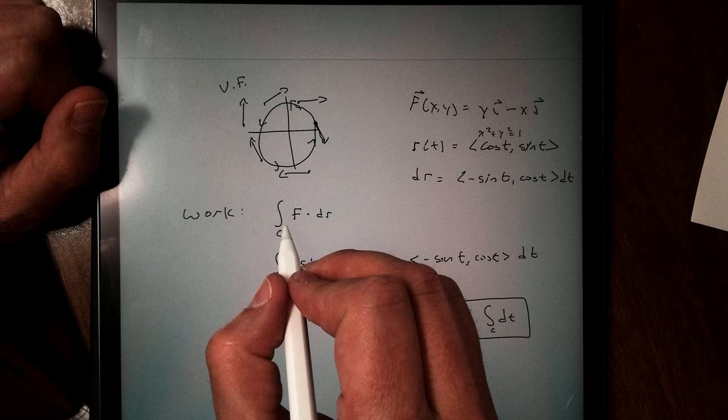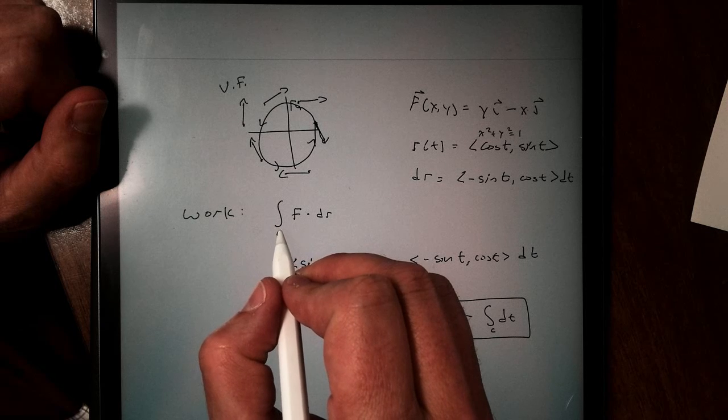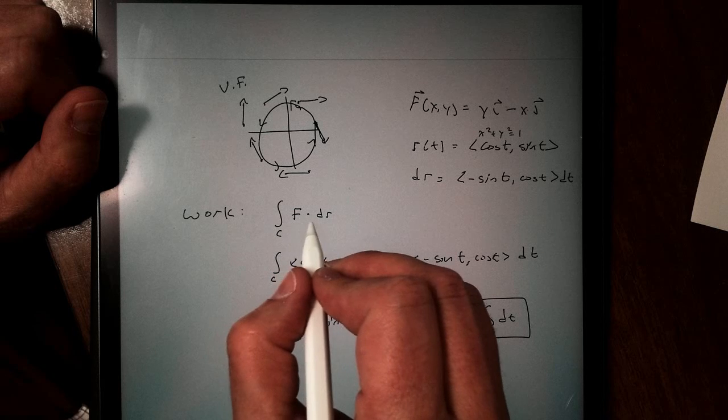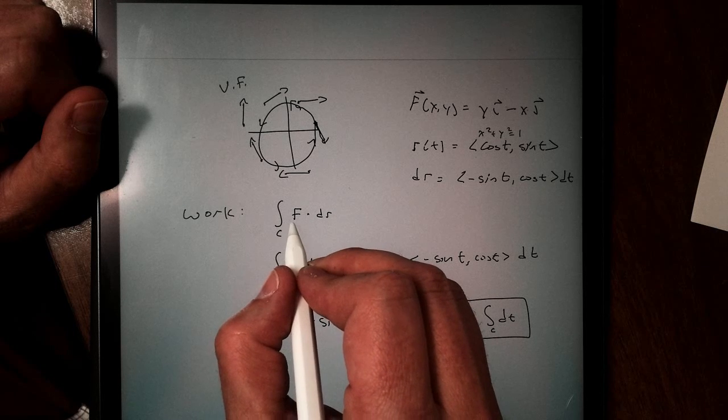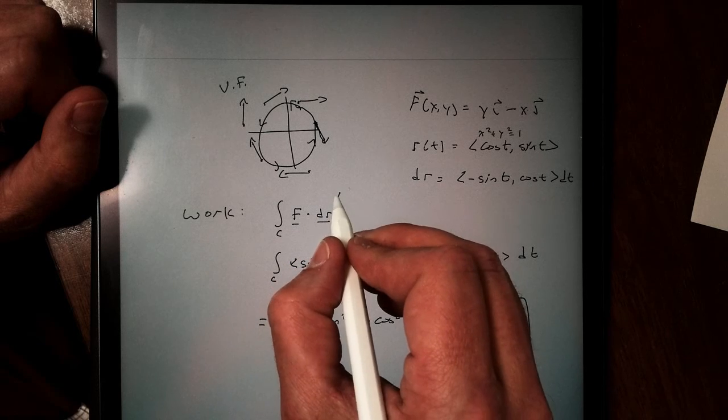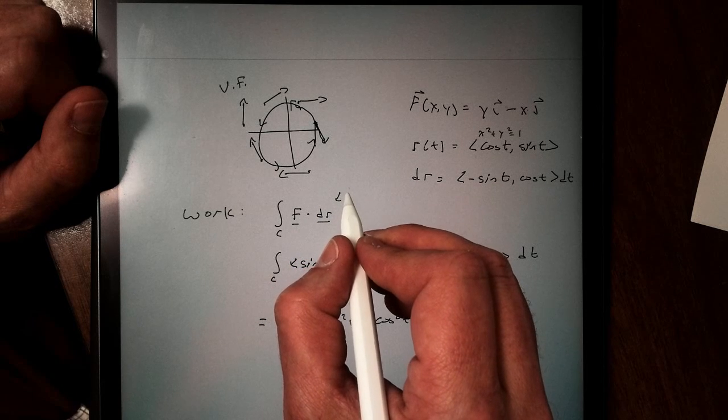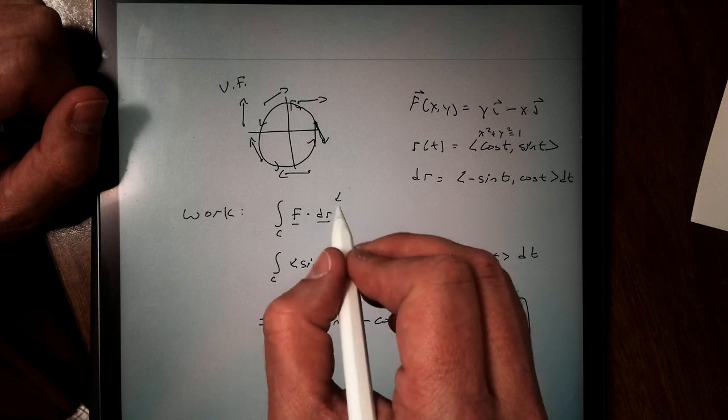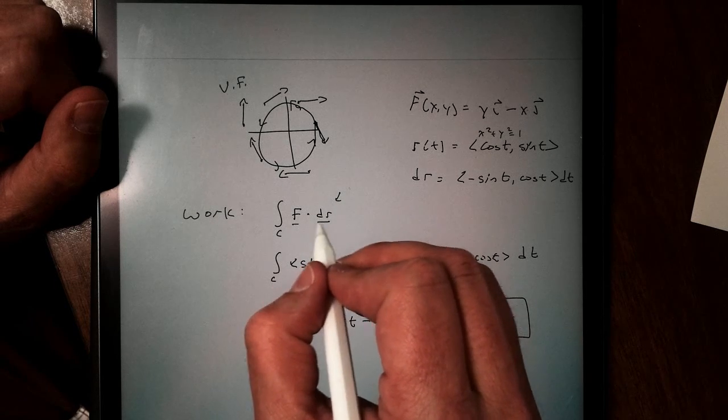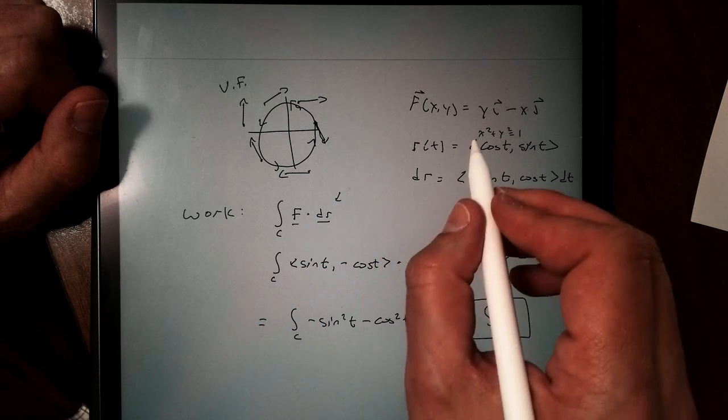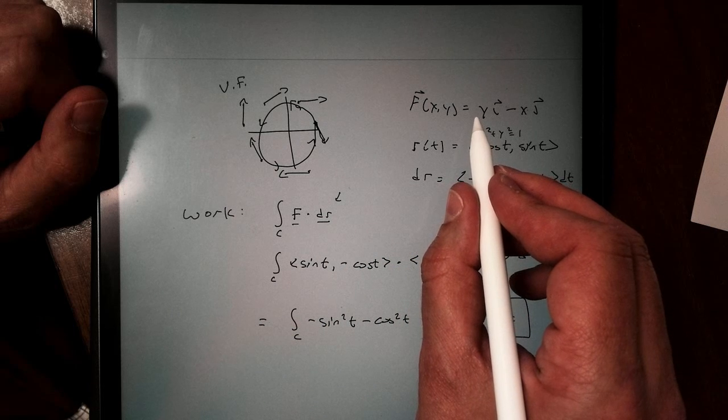To get work, it is the line integral of a vector field. So I'm taking my line integral of my force, and I'm dotting that, multiplying that with my dr. Remember that dr is our change in displacement. Now, this one, dr, is actually pretty easy to find. Not always the case. So a way I can solve this now, my vector force, I want to convert that to a parametric. So my vector force is going to be sine t, negative cosine t.